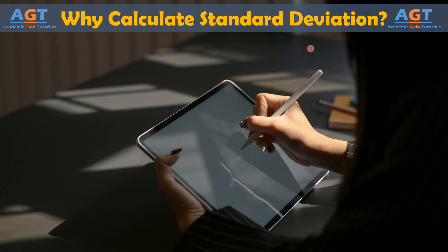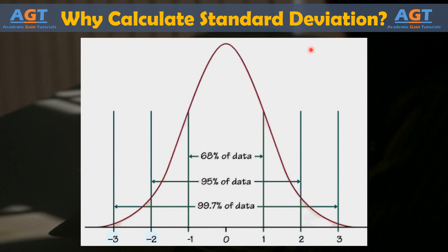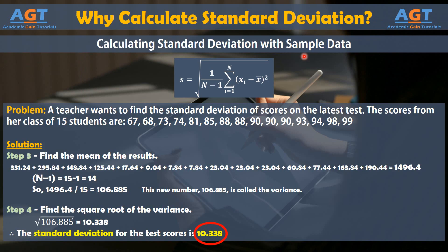Standard deviation gives you an idea of how much variation actually exists in a process while taking outliers somewhat into account. In the example of the grades from last lecture, the sample standard deviation indicates that most of the grades are going to fall within 10.33 points on either side of the average.